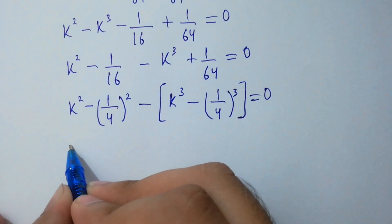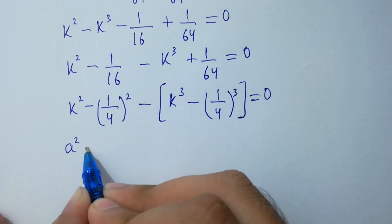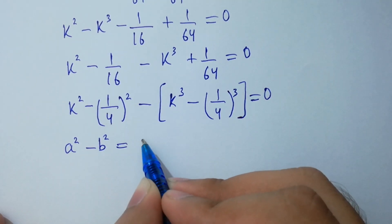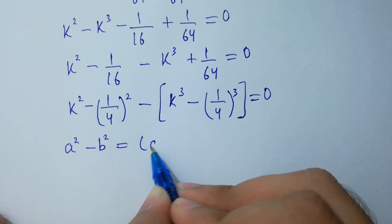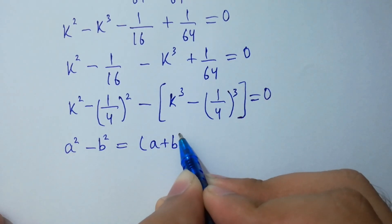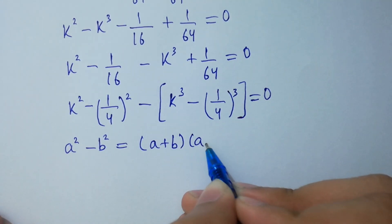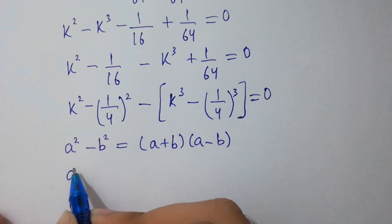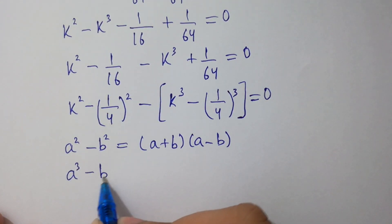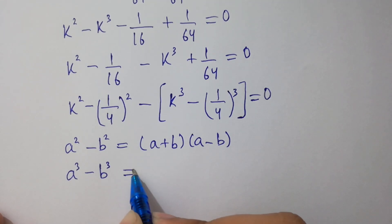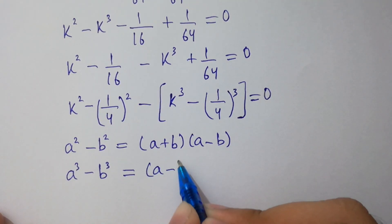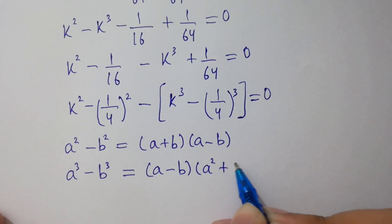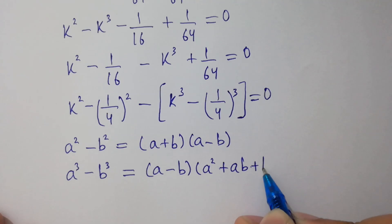Since a squared minus b squared equals a plus b times a minus b, and a cubed minus b cubed equals a minus b times a squared plus ab plus b squared.